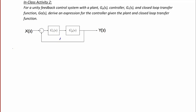So first, in Lecture 1-1, we derived the closed-loop transfer function. I'll write that here as GcGp over 1 plus GcGp. Another way to denote T is just G0, the closed-loop transfer function. So G0 is equal to GcGp over 1 plus GcGp.